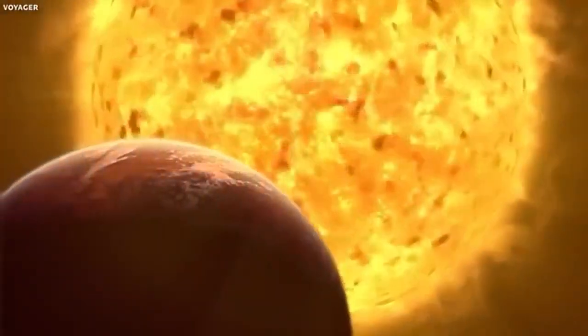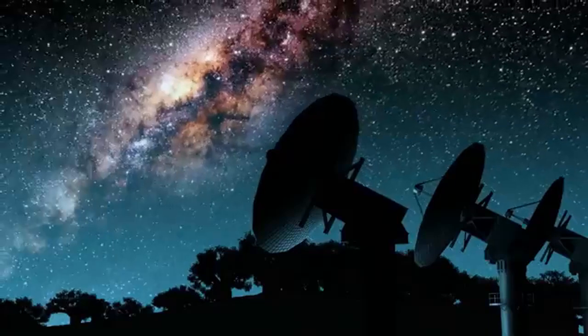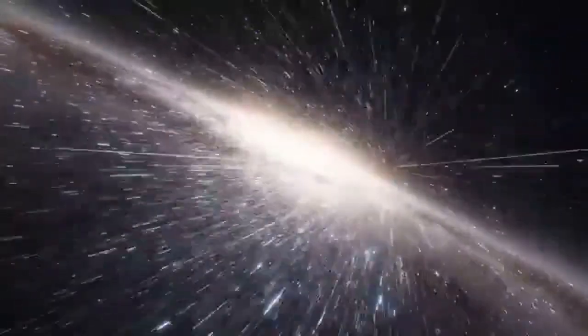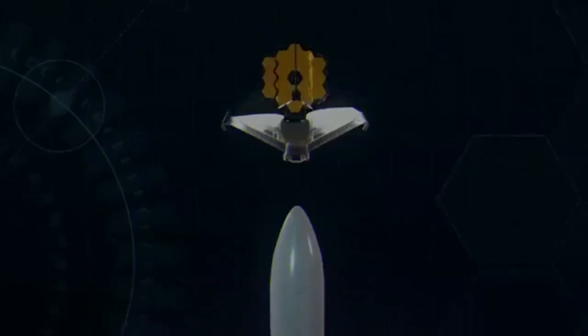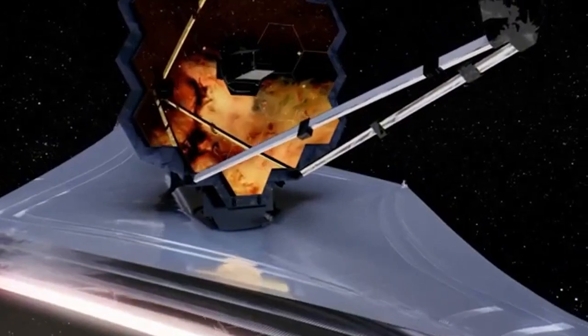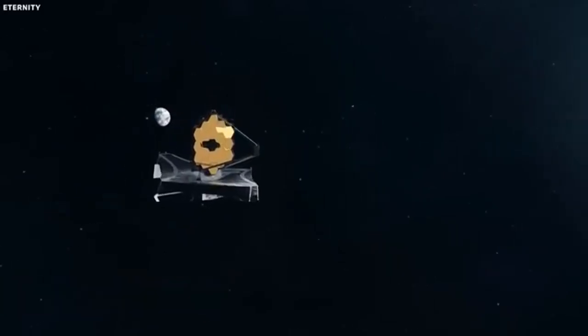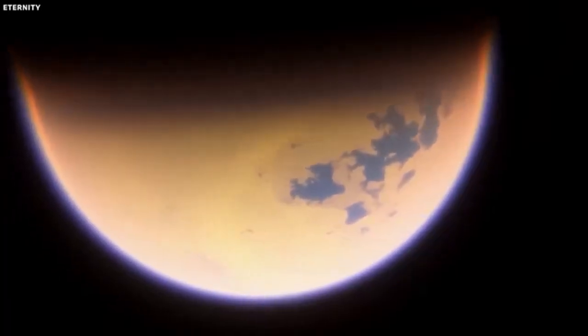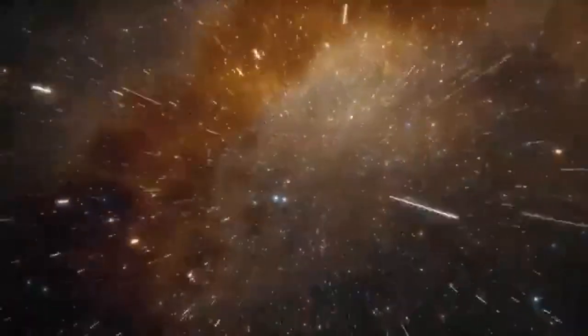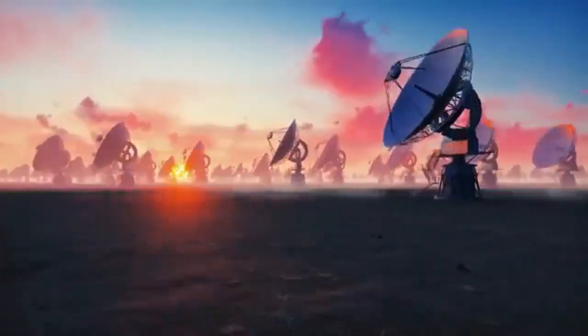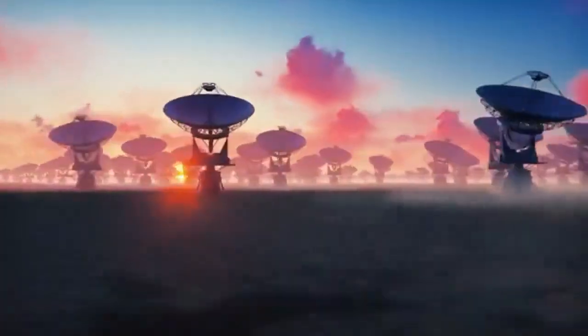So how was the James Webb Space Telescope, or JWST, able to help us here? Positioned at the second Lagrange point, or L2, approximately 1.5 million kilometers, or about 1 million miles away from Earth, the JWST is the pinnacle of our space-age inventions. This location allows it to maintain a stable orbit relative to our planet as it revolves around the Sun. Equipped with an array of advanced scientific instruments, the JWST can capture images and collect data across various wavelengths, especially in the infrared range. Its primary mirror is composed of 18 hexagonal segments and has a diameter of 6.5 meters, or 21 feet.